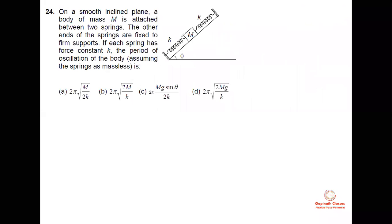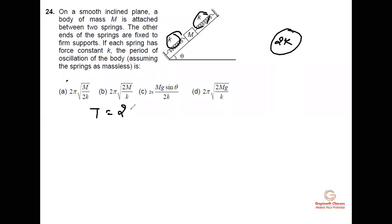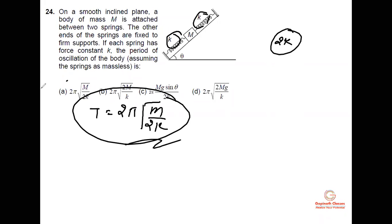Here there are two springs in parallel combination, so the effective spring constant becomes 2k. The time period T = 2π√(m/k_eff). With k_eff = 2k, just substitute: T = 2π√(m/2k). Your answer is that. There is not much more force discussion needed here.